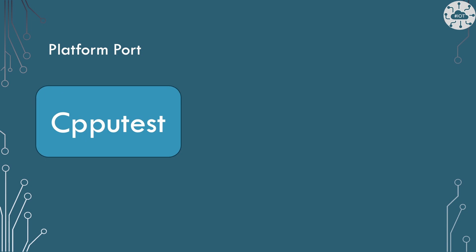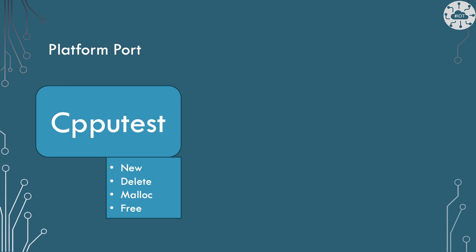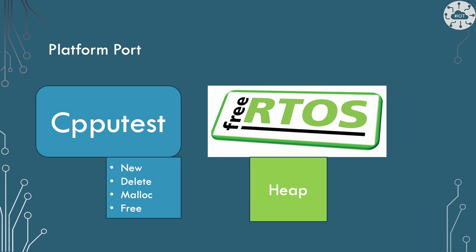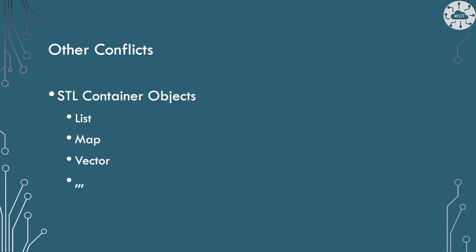CppUTest handles memory management by defining system-wide new and delete for C++ to use its code for allocation and deletion of objects. It also provides its own versions of malloc and free which wrap the system versions. All of those now have to point to the FreeRTOS heap and we've got to link those across. The problem is that when I'm using FreeRTOS and C++ I also allocate with new and delete, so there's going to be a potential conflict here. For CppUTest code only, I'm going to have to be really careful not to put in my system-wide new and delete configuration to make those use the FreeRTOS heap, and instead allow that to go through CppUTest.